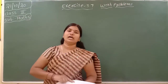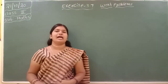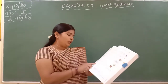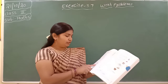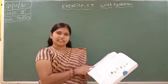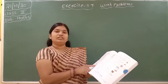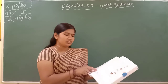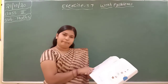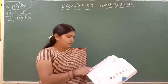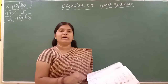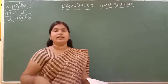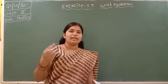First of all you have to do the answers, then you have to check the answers also. Mommy brought 18 bananas, 24 oranges and 28 apples to make a fruit salad for the picnic. How many fruits did she buy in all?